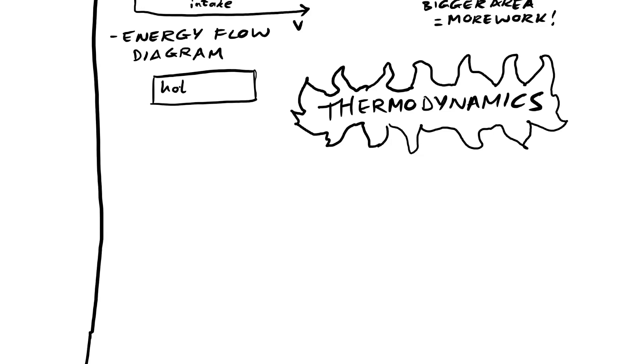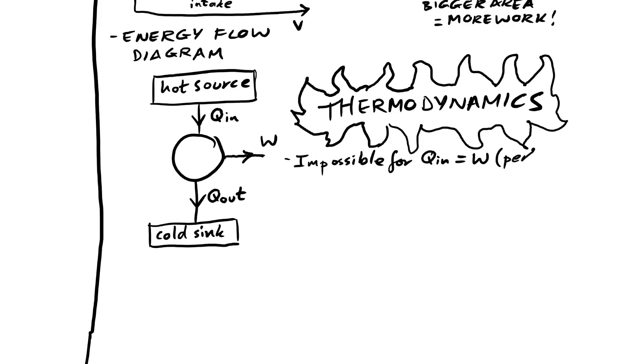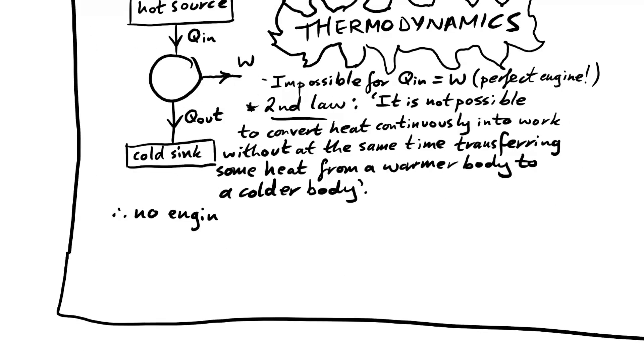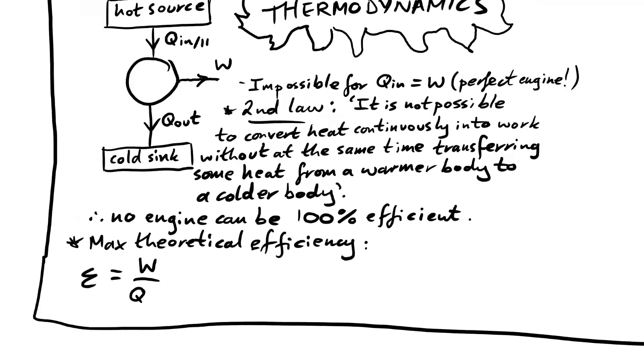Let's talk about more conceptual things regarding engines. We can have an energy flow diagram. Any engine requires heat to go in, we can call that Q in or Q H actually, that comes from a hot source. In a petrol and diesel engine that comes from the actual combustion of the gases. We have some work that is done as a result of that. But not all of that heat that goes in can be converted into work. So some of that heat has to come out, we say that goes to a cold sink. In an engine's case, that heat goes out with the spent gases. And it's impossible for Q H to be equal to the work done. If that was the case, we'd have the perfect engine. And that would go against the second law of thermodynamics. It's not possible to convert heat continuously into work without at the same time transferring some heat from a warmer body to a colder body. In other words, no engine can be 100% efficient.